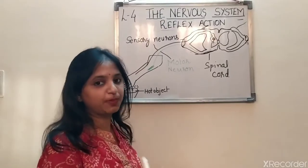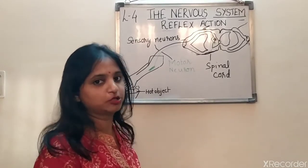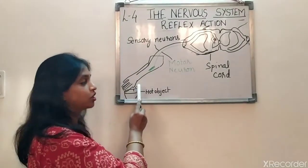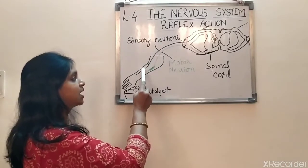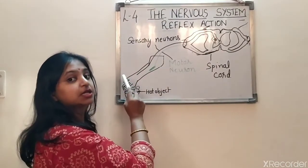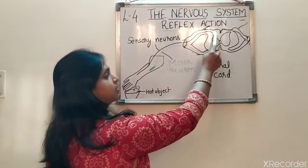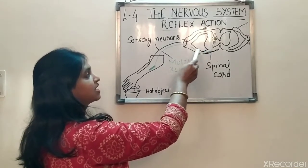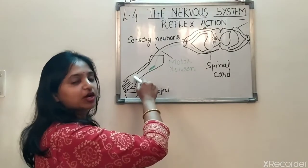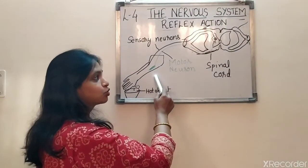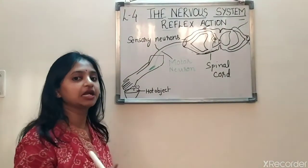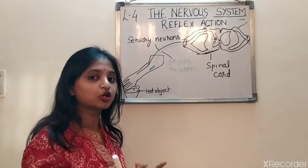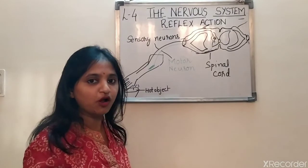Now I am going to explain it with the diagram, which is also in your book. This is the spinal cord. When you touch any hot object, the sensory neurons present in your skin take the message to the spinal cord. The spinal cord then sends the message through the motor neurons to the hand to withdraw. In this way, reflex action works — it takes place in less than a second. These are automatic actions and they do not involve the brain.